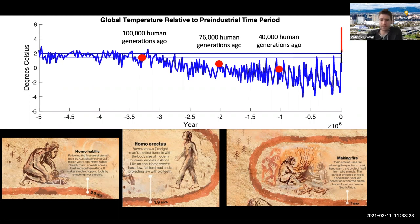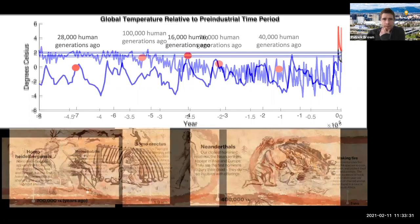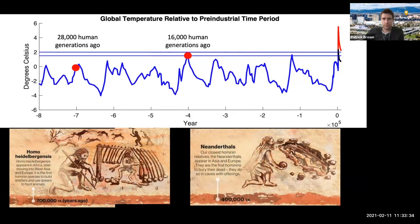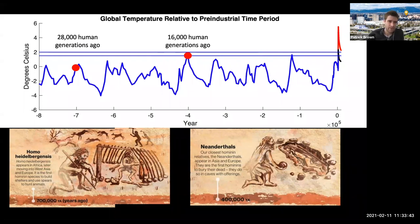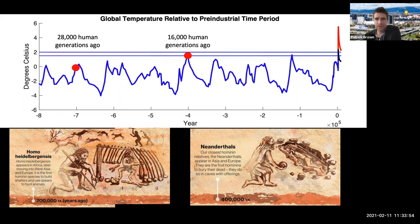We have evidence of our ancestors making fire 1 million years ago — 40,000 human generations ago. Notice our ancestors were able to withstand these turbulent times in terms of climate as ice ages came and went many times. 700,000 years ago, we have evidence of shelters and spears to hunt animals — 28,000 human generations ago.